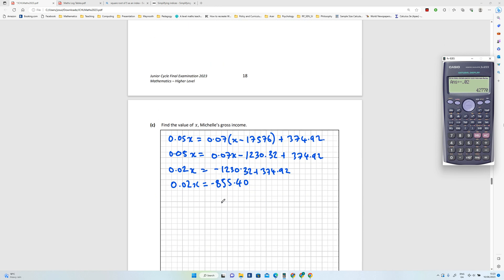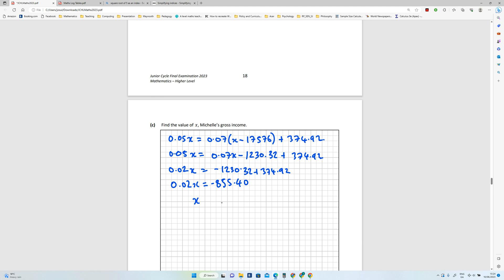To get, so I'm dividing across by 0.02. Sorry, that should be minus when I bring all, when I subtract the minus 0.07, it's going to be minus on that side. So this is X is equal to 42,770 euro.